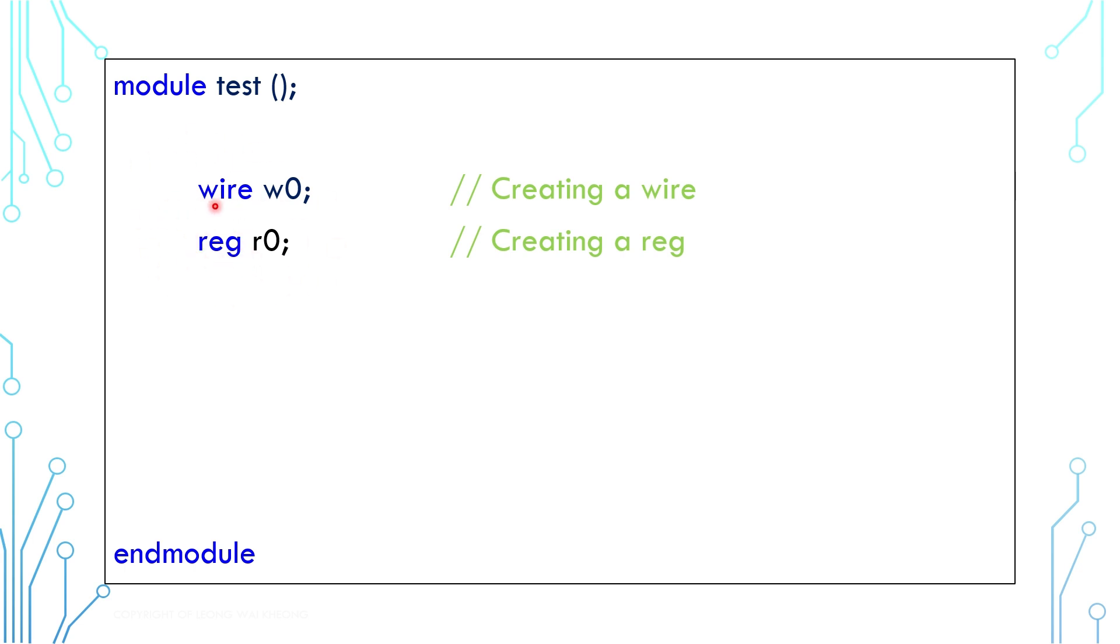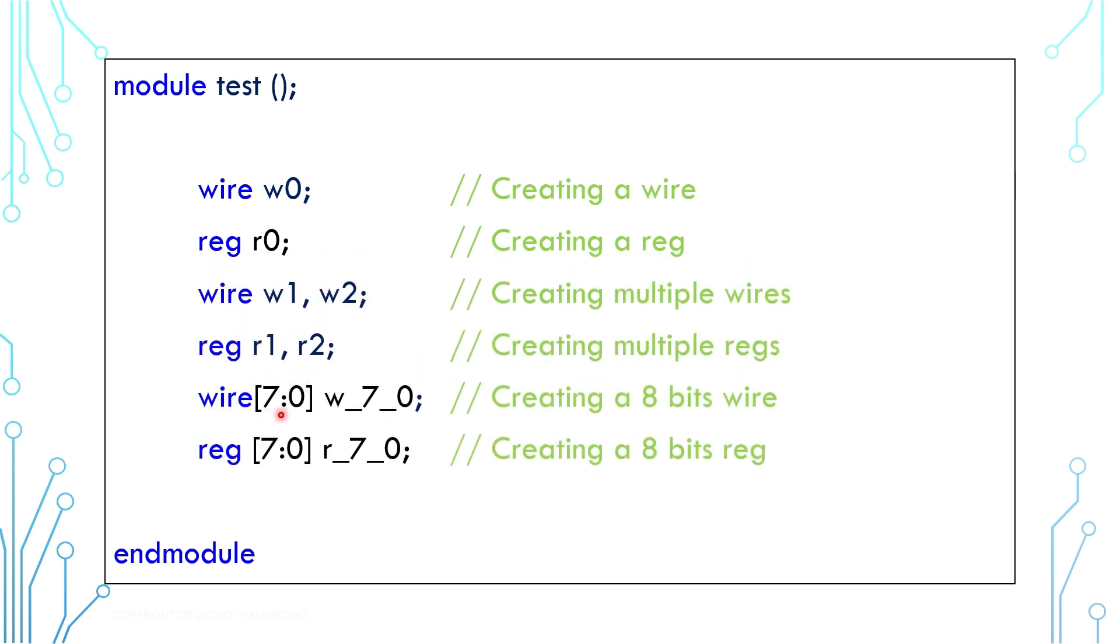Wire as the name implies is used for connectivity. Reg stands for register, although it is really not a register. You can create multiple wires and multiple reg. You can also create multiple bits version by using square bracket notation.